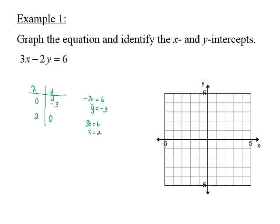We have the points 0, negative 3, and 2, 0, and we draw the line between those two points. If you want to find other points on the line, simply choose a value for x, substitute it, solve for y. You can also substitute values for y and solve for x.